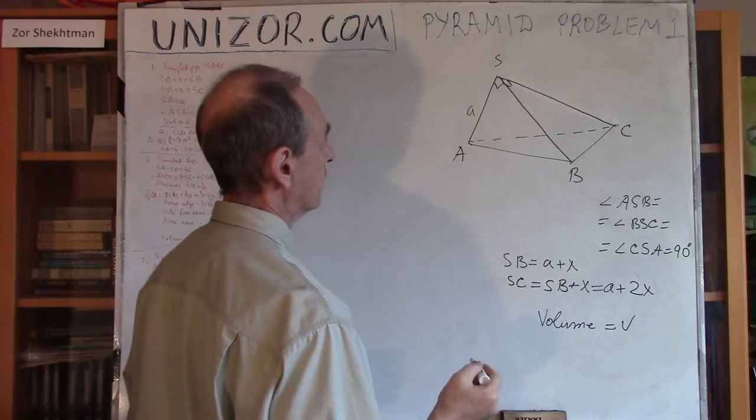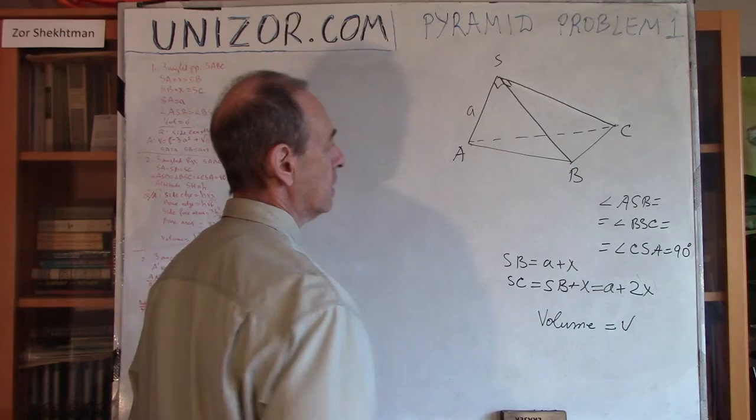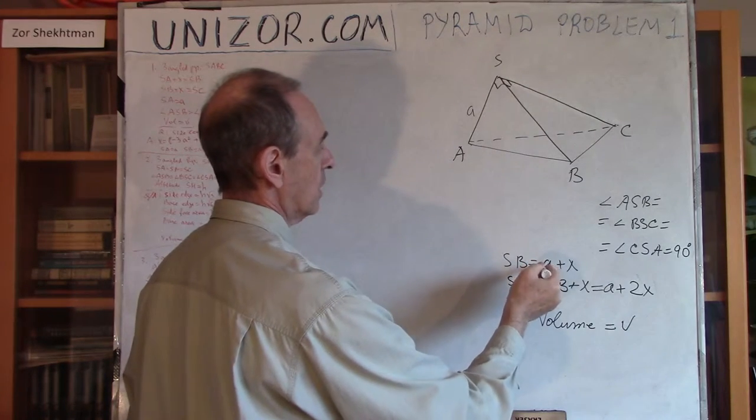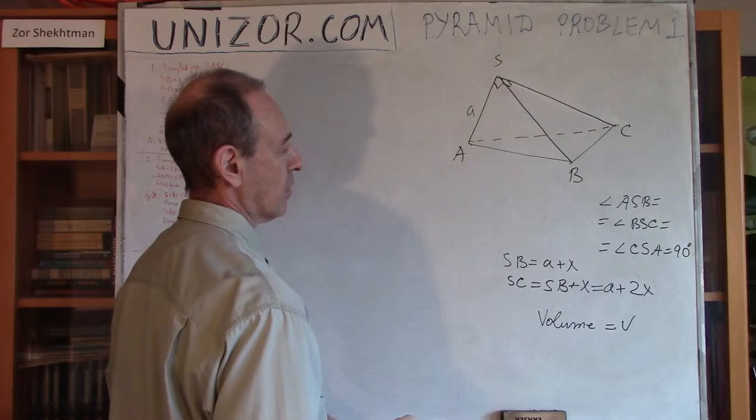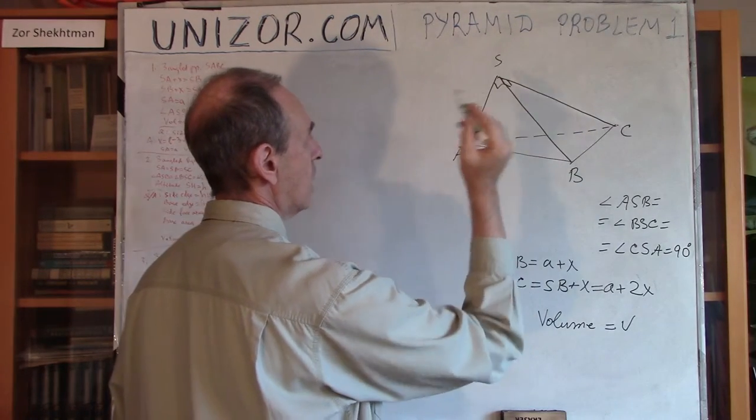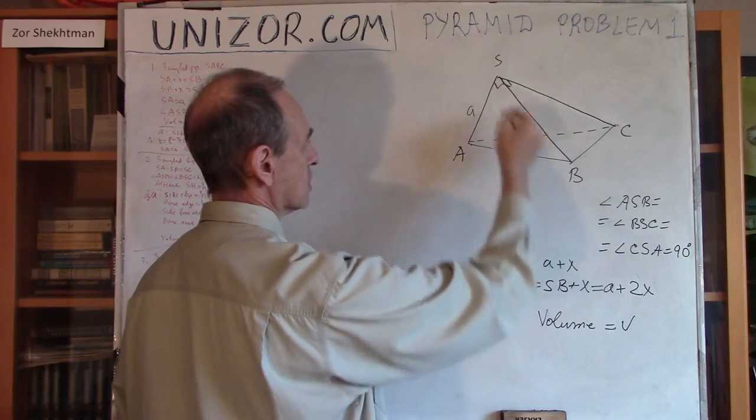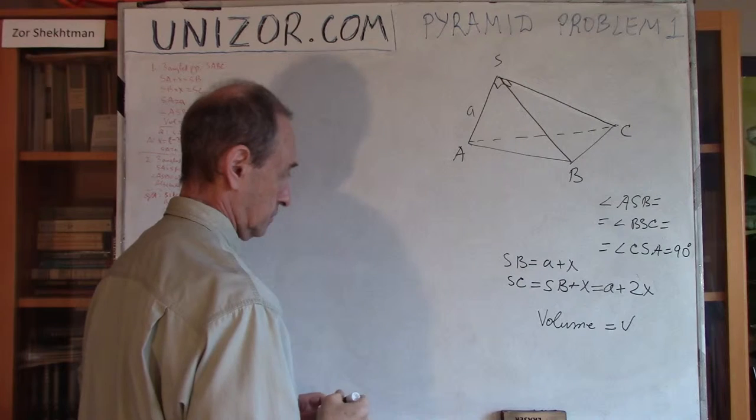We know one of them, SA. We don't know the others, but we do know they represent an arithmetic progression, which means SB is equal to A plus X, where X is a difference, and SC is equal to SB plus X, or SA plus 2X. We also have the volume of the pyramid equals V. We know A, we know V, and we know that these angles are right angles. What we have to determine is all these three edges, or basically the X.